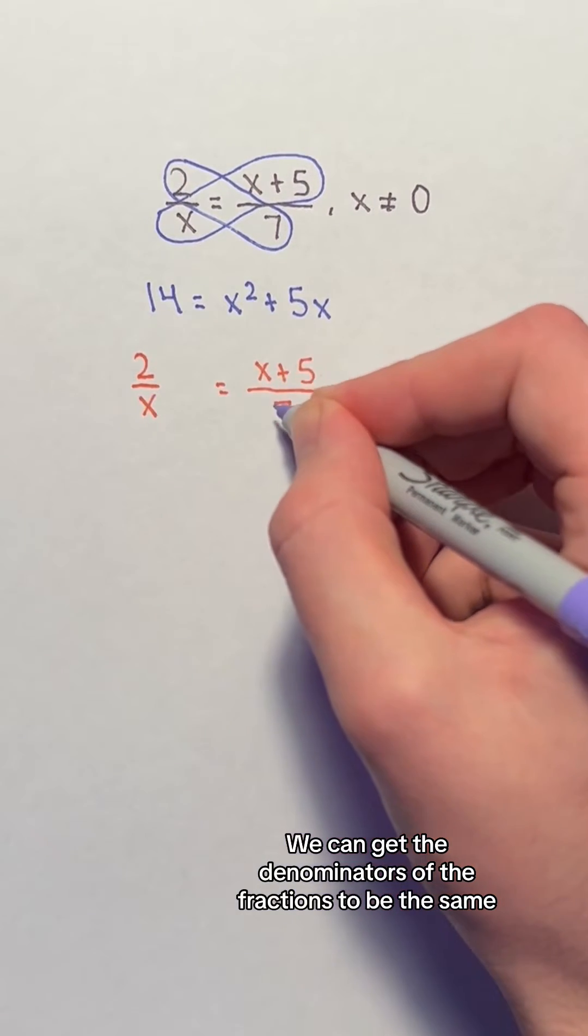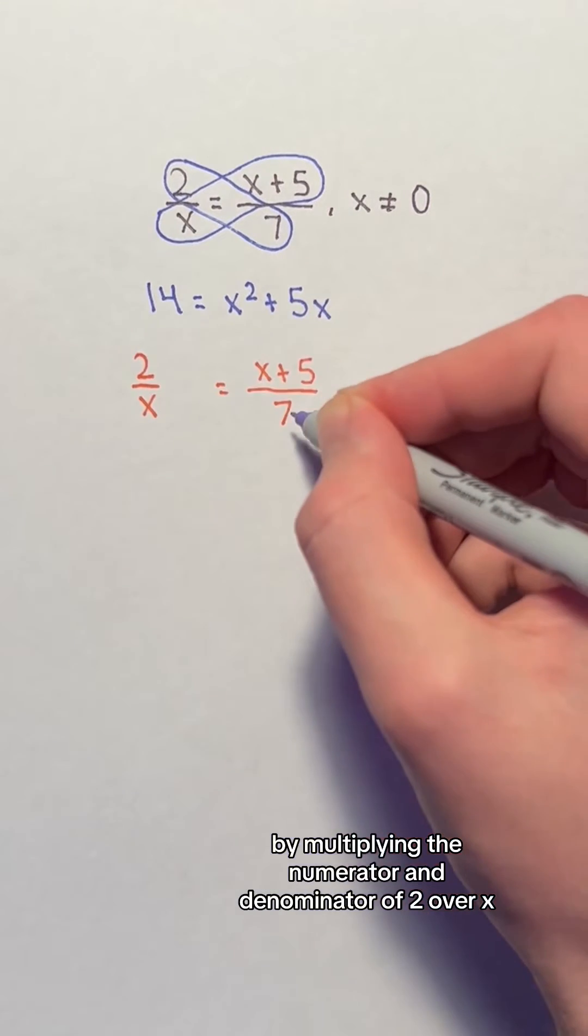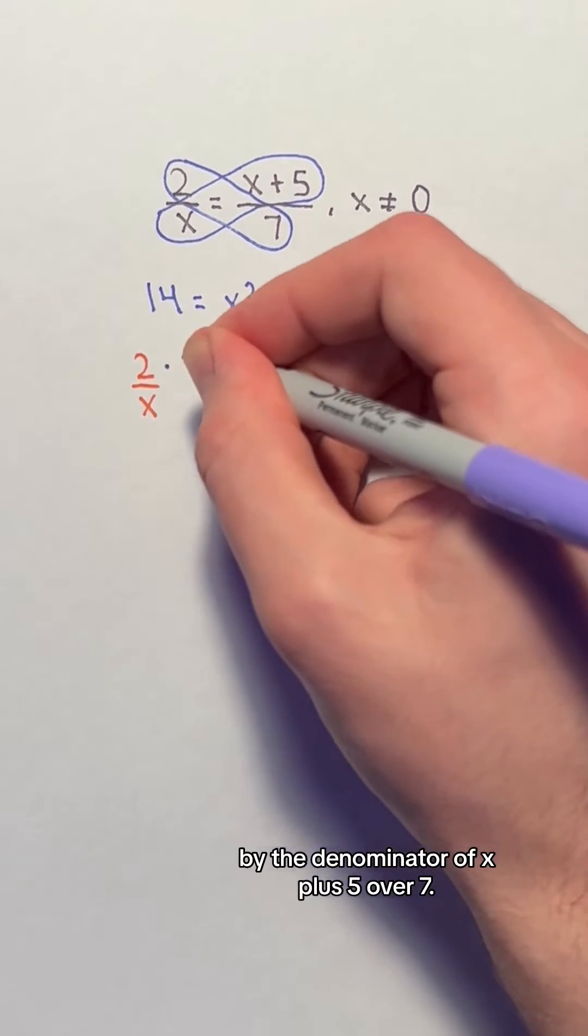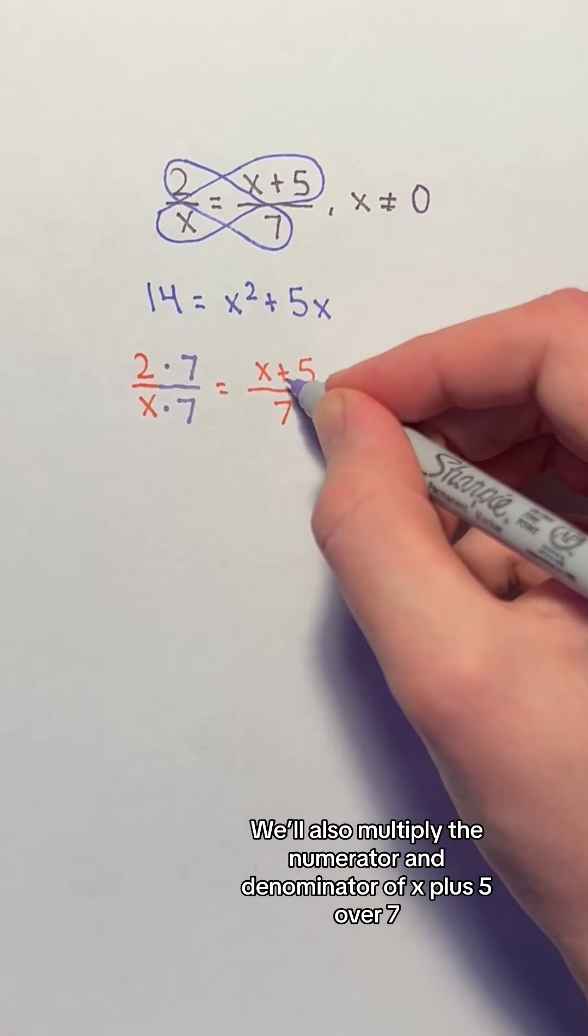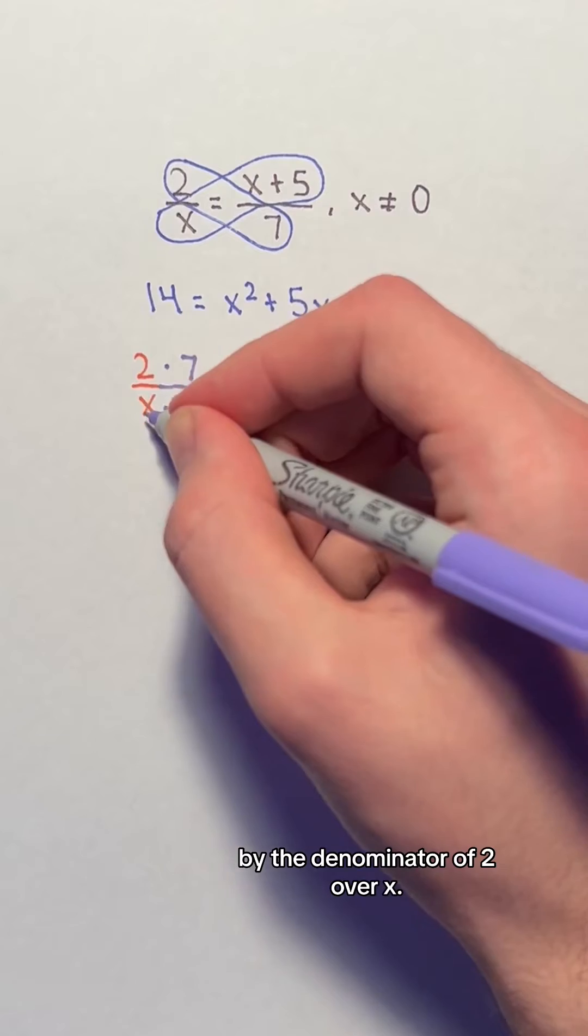We can get the denominators of the fractions to be the same by multiplying the numerator and denominator of 2 over x by the denominator of x plus 5 over 7. We will also multiply the numerator and denominator of x plus 5 over 7 by the denominator of 2 over x.